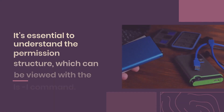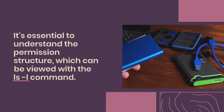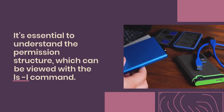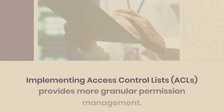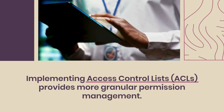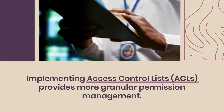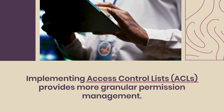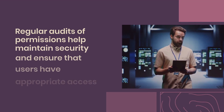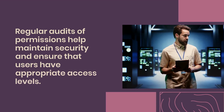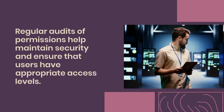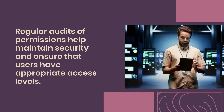It's essential to understand the permission structure, which can be viewed with the ls -l command. Implementing access control lists, ACLs, provides more granular permission management. Regular audits of permissions help maintain security and ensure that users have appropriate access levels.